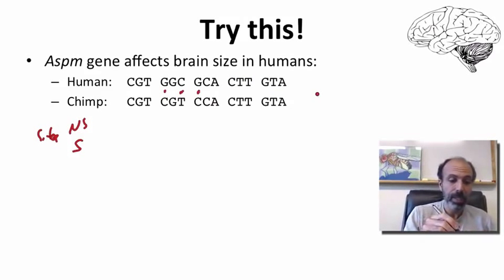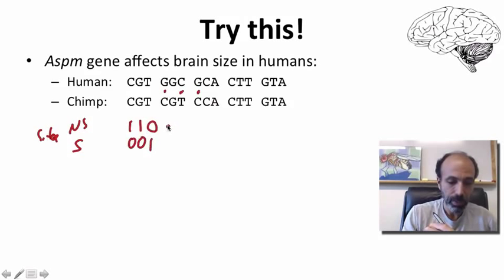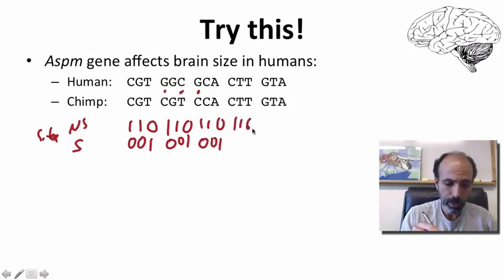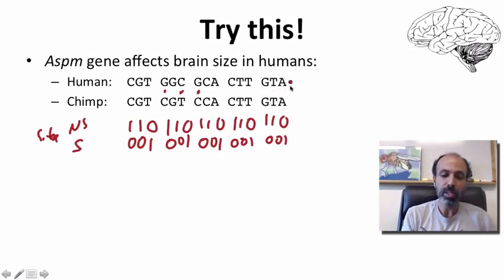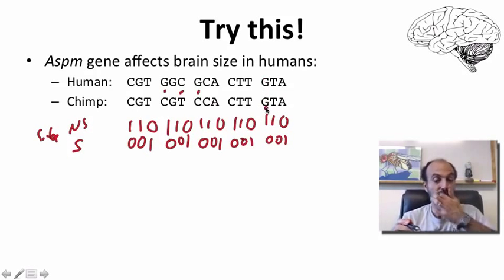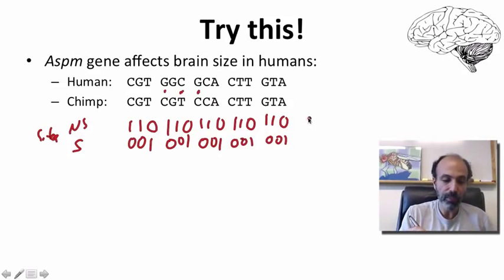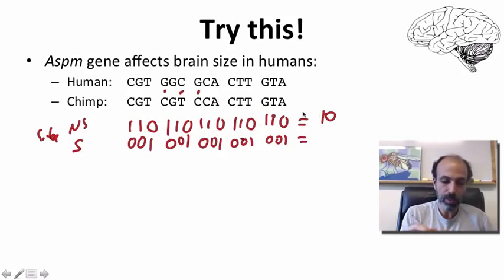For the non-synonymous sites: these are all typical codons where the first and second positions are non-synonymous and the third position is synonymous. Tallying up: there are 10 non-synonymous sites and 5 synonymous sites. For the actual changes, there are 2 non-synonymous changes and 1 synonymous change.